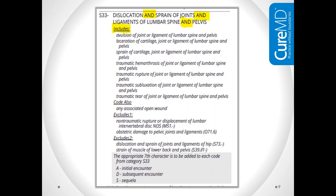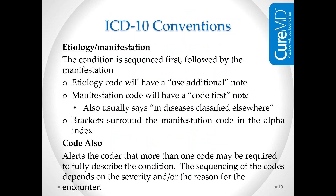In the S33 category we also see an 'includes' note telling us it includes avulsions of joints and ligaments, traumatic ruptures, and traumatic tears of joints and ligaments of the lumbar spine and pelvis. This code also has 'excludes 1,' 'excludes 2,' and seventh character instructions — we'll get to those. There are also 'code also,' 'code first,' and 'use additional' conventions that we need to be aware of.